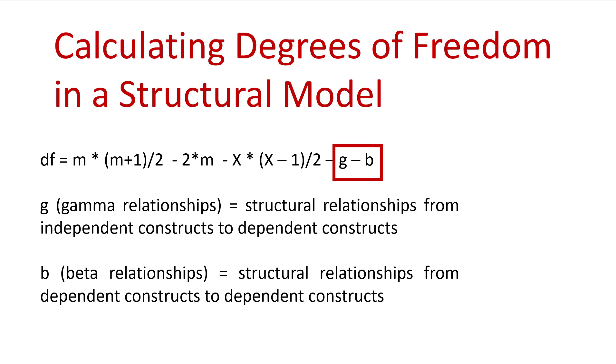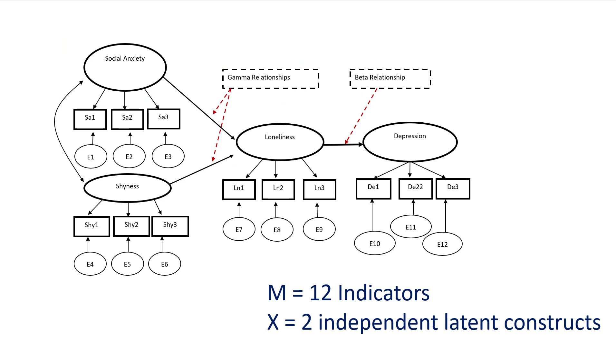Let's use another example. I've got four constructs, all measured with three observables. There are two independent constructs in this formula: social anxiety and shyness. They have a relationship to loneliness, and then loneliness has a relationship to depression. In this model we have two gamma relationships—social anxiety and shyness to loneliness—and one beta relationship, which is loneliness to depression.